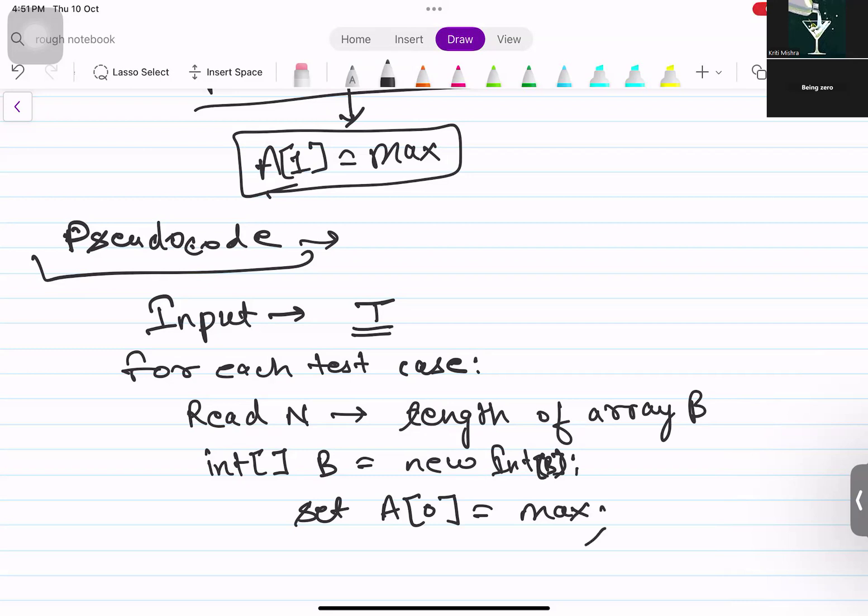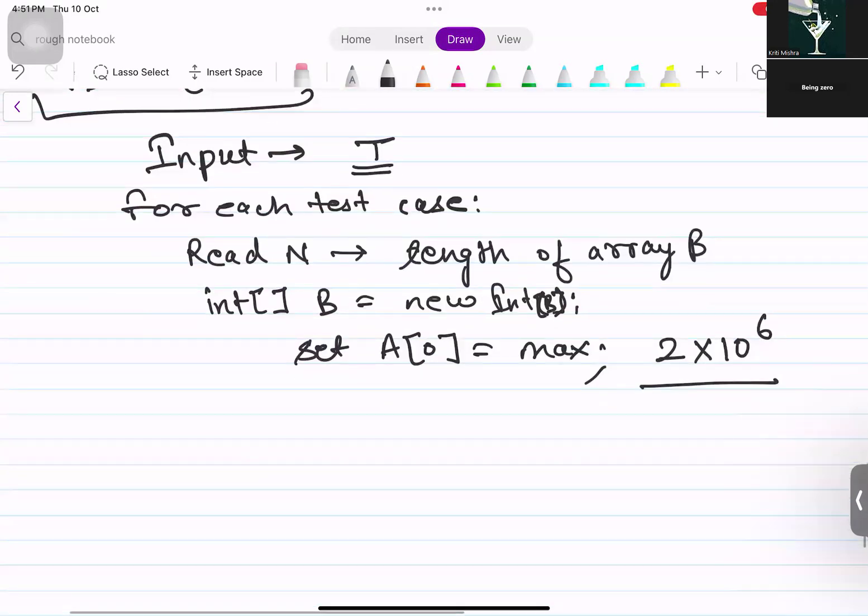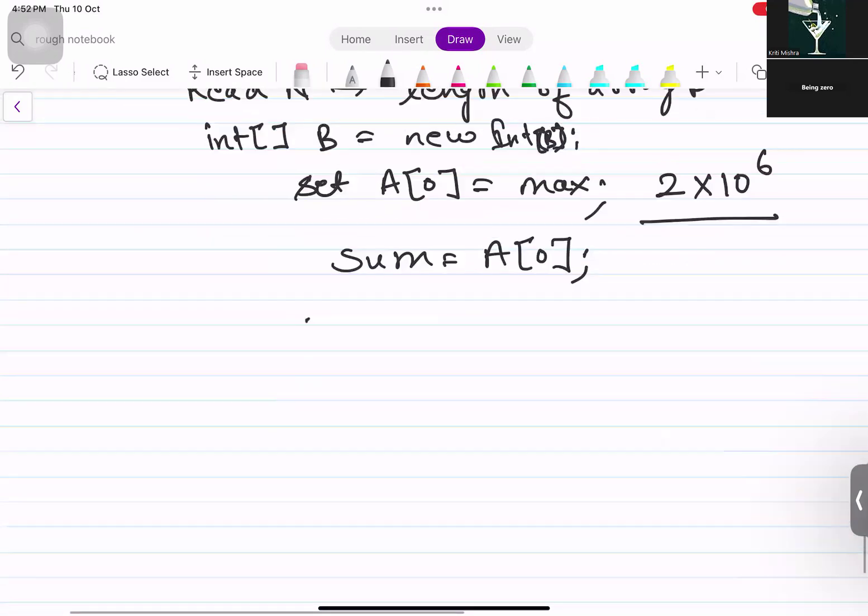After that, set A of 0 as the maximum element. We can take maximum to one of the constraints also. The constraints are 2 into 10 power 6. This is an array element constraint. So we can take this also. Maximum value is 2 into 10 power 6. We can take any other element also if we want. After that, we need to run a loop from 1 to n-1, which is the size of the array. And also initialize sum to a of 0. Since we are starting loop from 1, we'll take sum to a of 0.